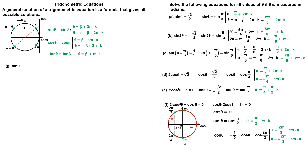Tangent of theta is equal to minus square root of 3. The reference angle is pi divided by 3 radians. Tangent is negative in quadrant 2 and quadrant 4. There are two points on the unit circle with tangent minus square root of 3: 2 pi divided by 3 and 5 pi divided by 3. We can write tangent of theta is equal to tangent of 2 pi divided by 3. The general solution is given as follows.